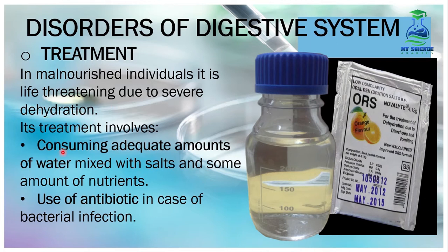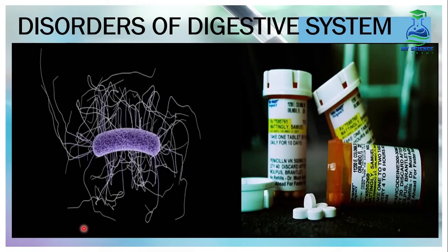To treat diarrhea, the patient should consume adequate amounts of water mixed with salts and some nutrients, because along with water, salts and important nutrients are also rapidly lost from the body. A solution like ORS is recommended. Number 2, use of antibiotics in case of bacterial infection — if diarrhea is caused by bacterial infection, antibiotics should be taken.